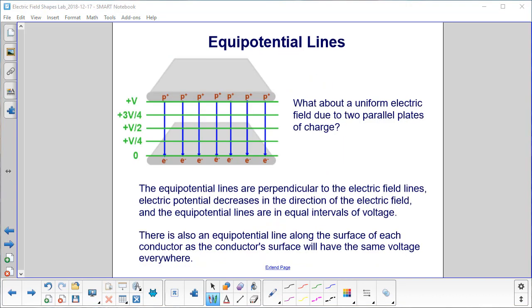What about a uniform electric field due to two parallel plates of charge? So now we just don't have one charge or two charges. We have entire planes of charges. The equipotential lines will be perpendicular to the electric field lines. So the electric field lines are those blue lines going down like we showed earlier.